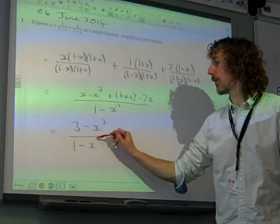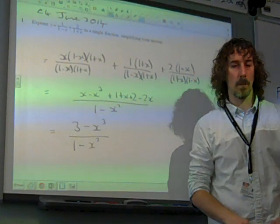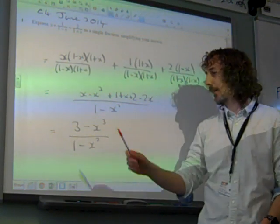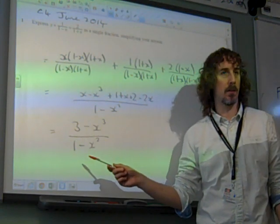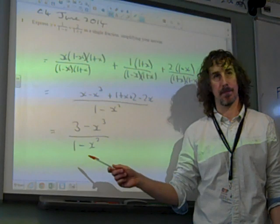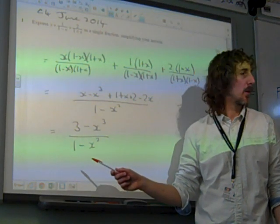We've got 3 minus x cubed, and (1-x) squared on the bottom. And that was your 3 marks. Leaving that as (1-x)(1+x), unfortunately, cost you a mark, which seems really harsh, but that's what happened. Great!